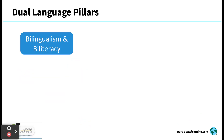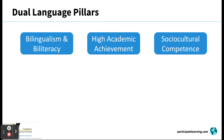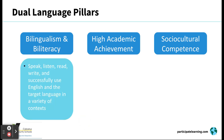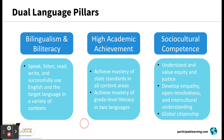There are three pillars to dual language. The first is bilingualism and biliteracy. The second is high academic achievement. And the third is sociocultural competence. For bilingualism and biliteracy, students will speak, listen, read, write, and successfully use English and the target language of Spanish in a variety of contexts. Students will achieve mastery of state standards in all content areas and achieve mastery of grade level literacy in two languages. Students will understand and value equity and justice, and develop empathy and open-mindedness, as well as global citizenship.